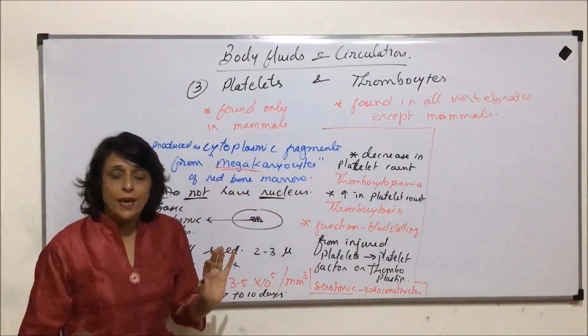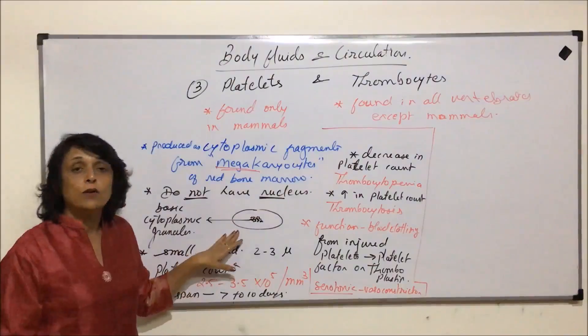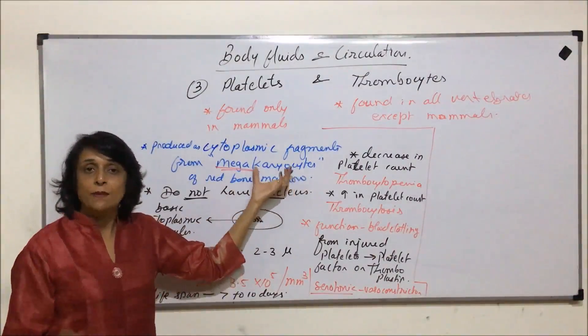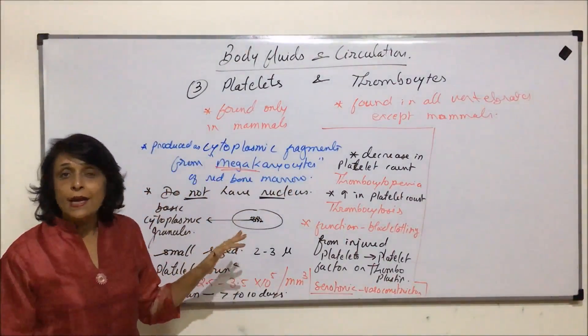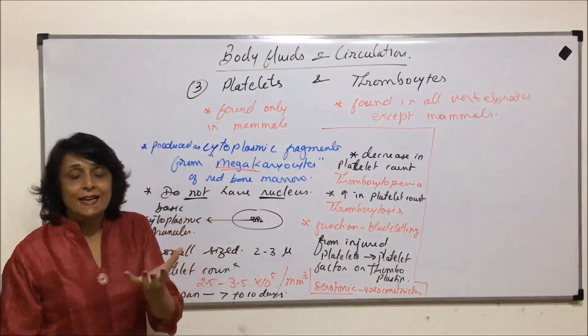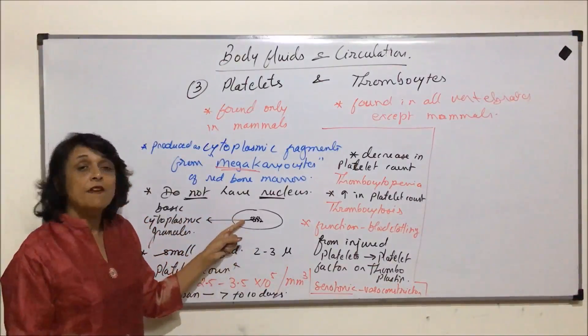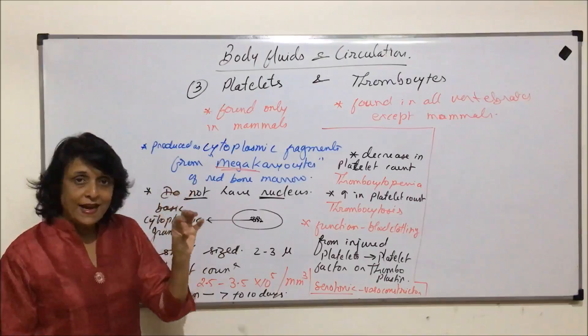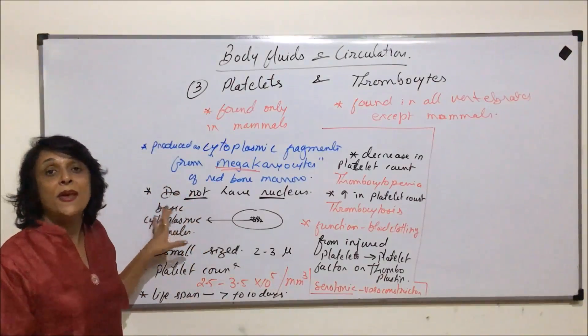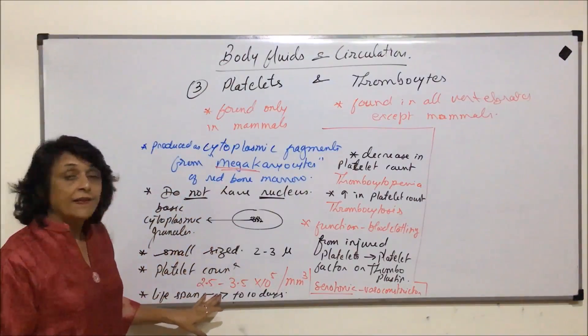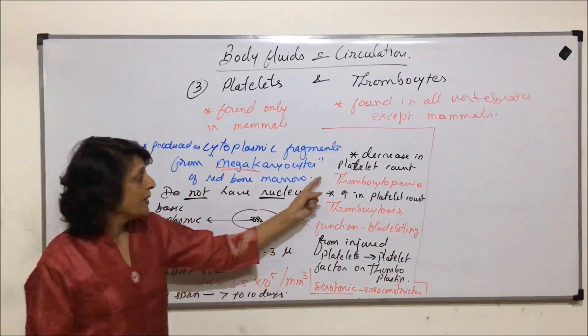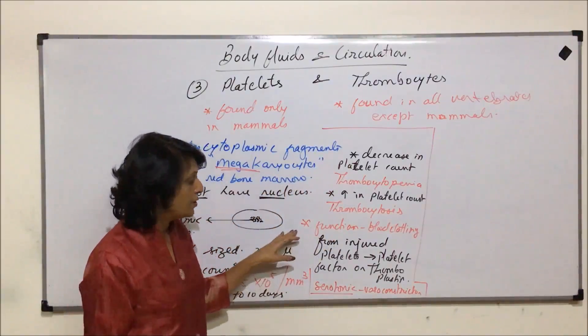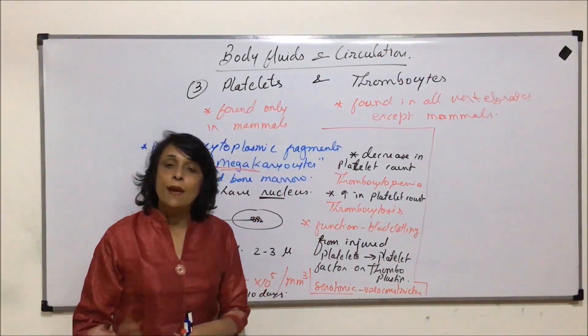So now what we know about platelets are the things that they are oval, small sized, formed as fragments, cytoplasmic fragments of megakaryocytes. They do not have nucleus, but whenever we see the diagram or in the smear, we find that in the center of the platelet there is something which is dark, and that dark area is actually made of dense basic cytoplasmic granules. Their number is known as platelet count. The number may increase or decrease and terms have been given to these conditions. And platelets help in blood clotting.